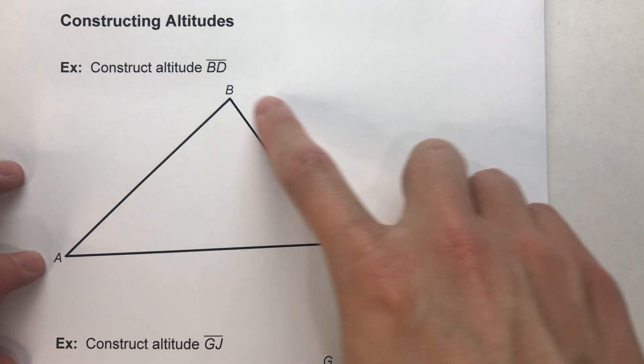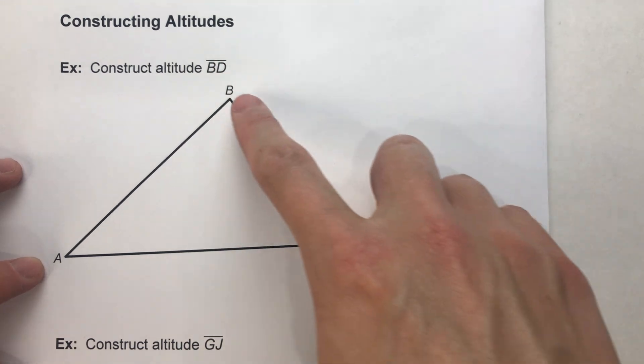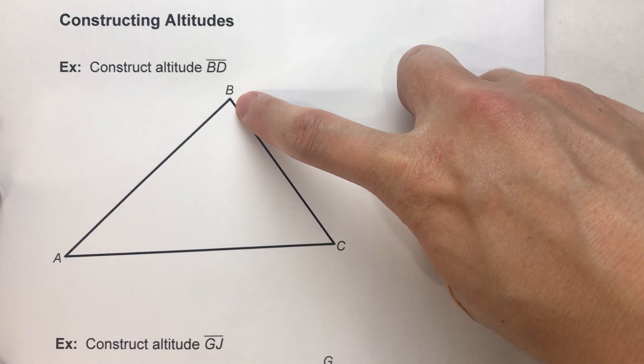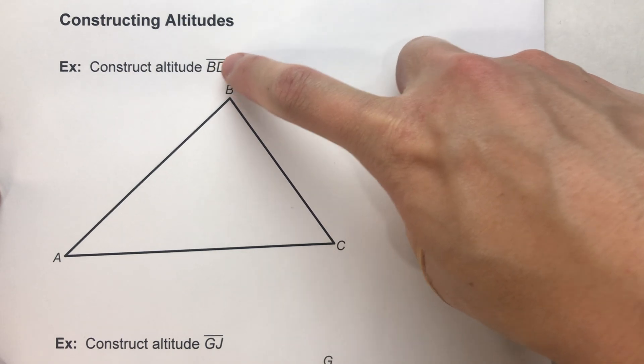So for this first one, construct altitude BD. So here's triangle ABC. We want the altitude from the vertex B because B is in the altitude.